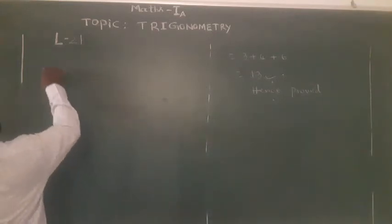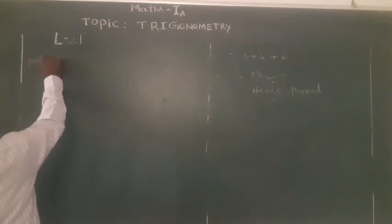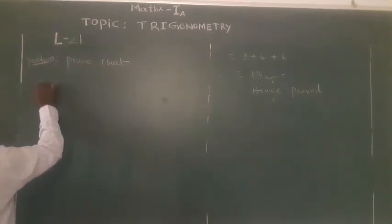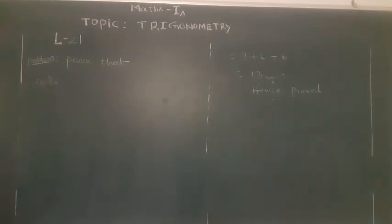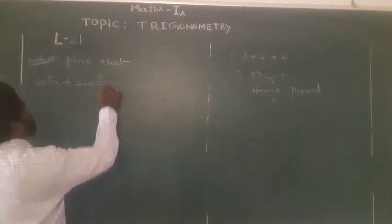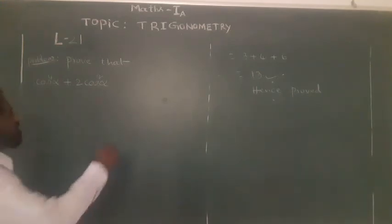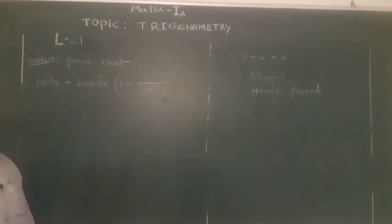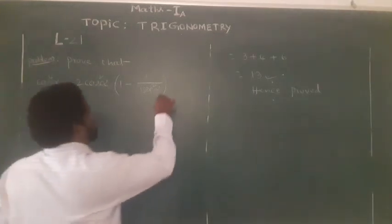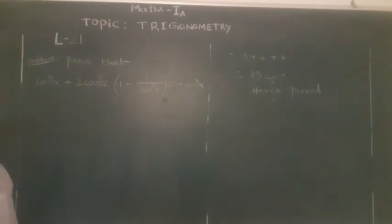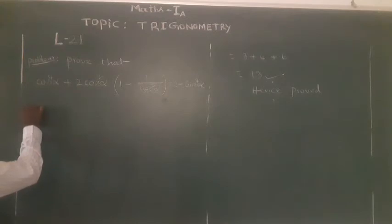Next question: Prove that cos⁴α + 2cos²α into (1 - 1/cos²α) = 1 - sin⁴α.